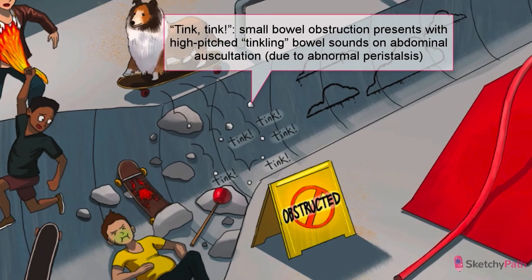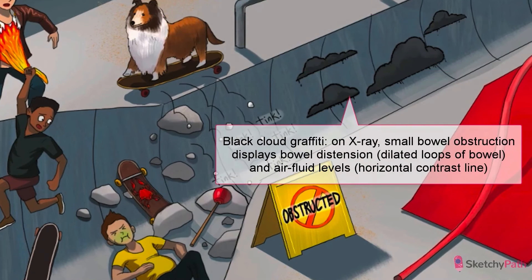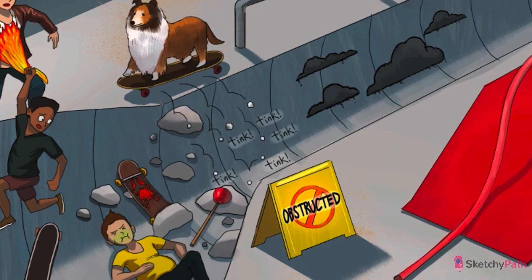Small bowel obstruction also has a characteristic appearance on abdominal x-ray: bowel distension, seen as dilated loops of bowel, along with air-fluid levels within those dilated loops. Gas is less dense than fluid, so these trapped pockets of gas appear darker on the radiograph. Look for that stark horizontal contrast line that separates the gas from the liquid below.